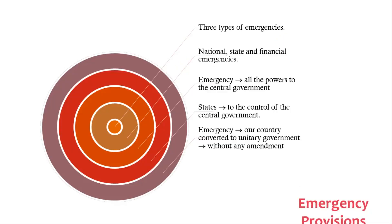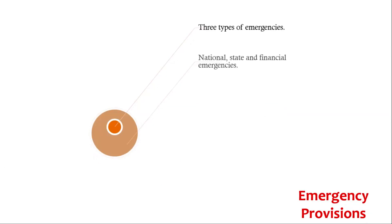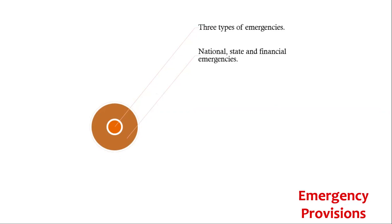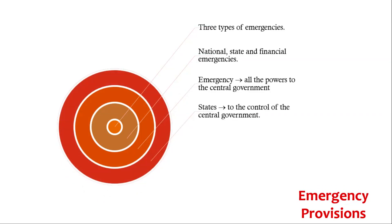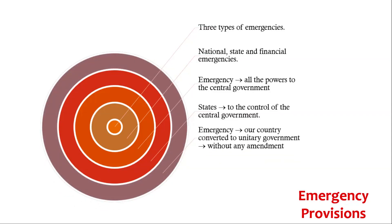The next feature is Emergency Provisions. The constitution mentions three types of emergencies: National, State, and Financial Emergencies. During any emergency, all power goes to the central government and the states come under the control of the central government. During an emergency, our country is converted into a unitary form of government from the federal government without any formal amendment of the constitution. This kind of transformation from the federal structure to the unitary structure is not found in any other federation.